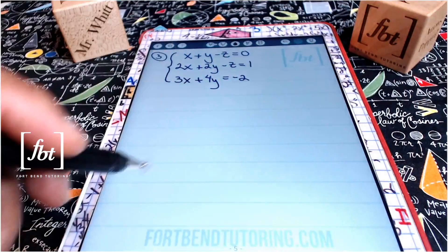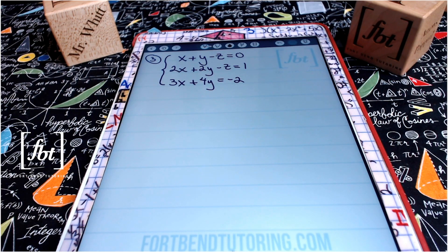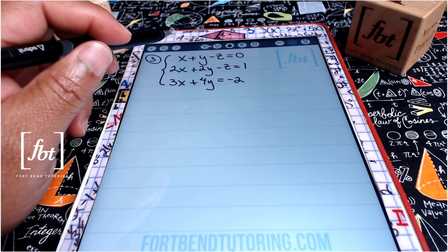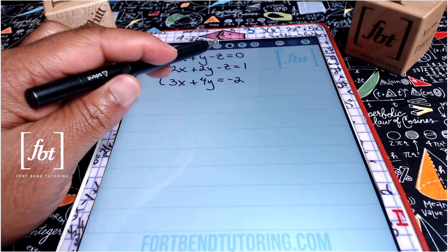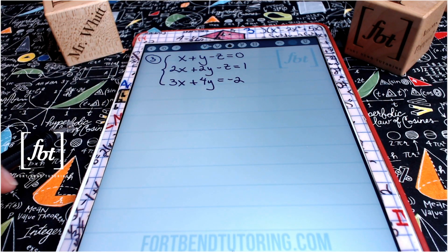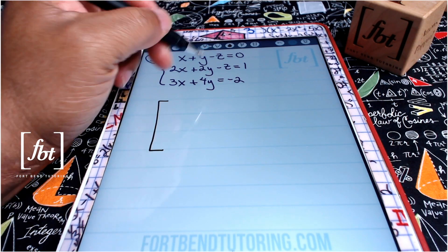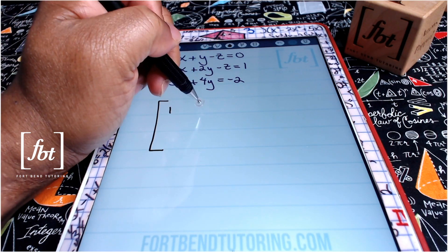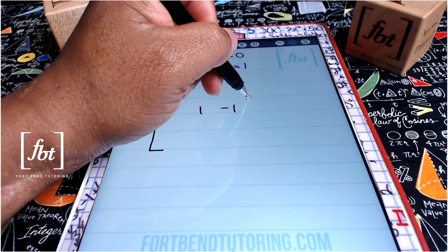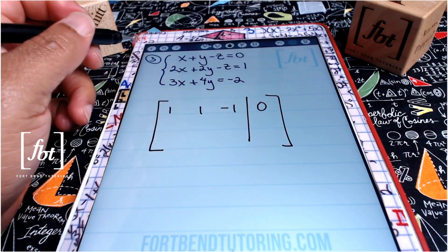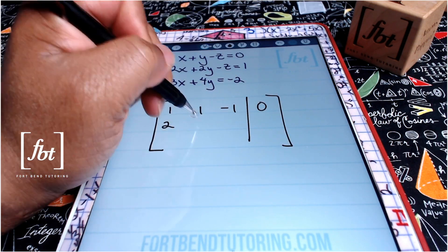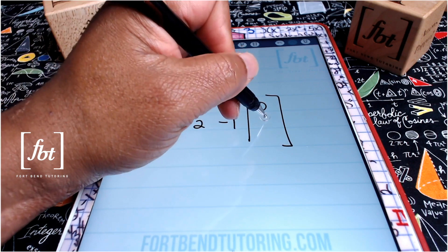Let's move on to problem number three. Notice that we have a system of equations with three variables. The process of writing the augmented matrix remains the same — you want the x terms first, the y terms second, and the z terms third, as well as your constants on the right side of the equation. Writing our augmented matrix, the first row will be one, one, negative one, and the constant zero. For the second row, we'll have two, two, negative one, and one.